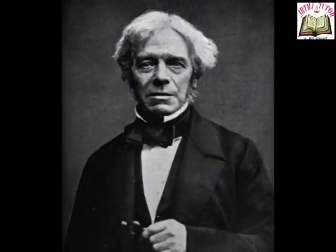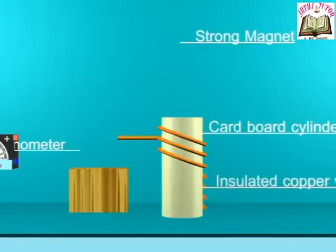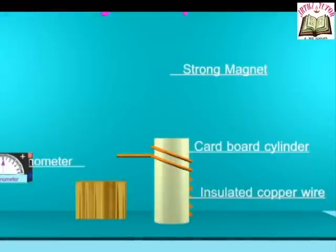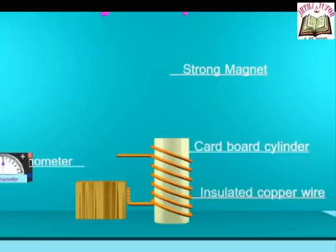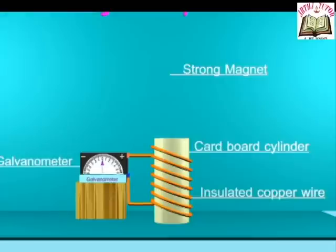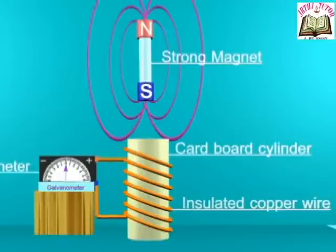Let us know about Faraday's coil and magnet experiment. Requirements: a cardboard cylinder, insulated copper wire, galvanometer and a bar magnet. Construction: wound a long insulated copper wire around the cardboard cylinder. The free ends of the copper wire are connected to a sensitive galvanometer. Any deflection in the galvanometer shows the presence of electric current.